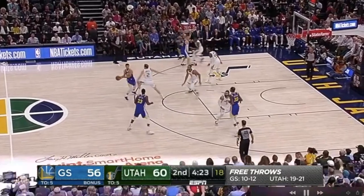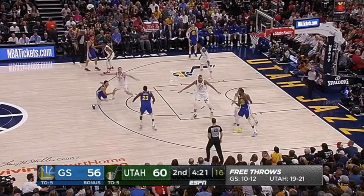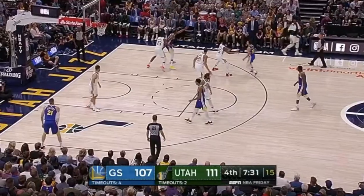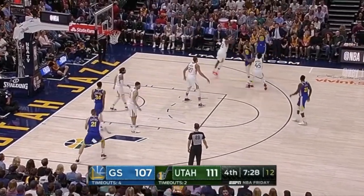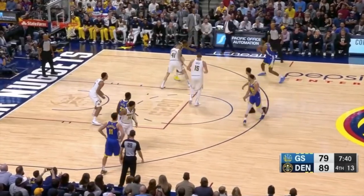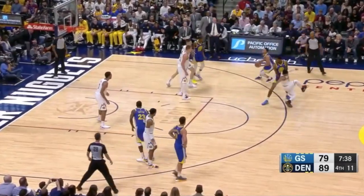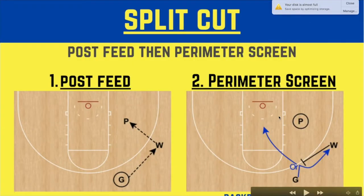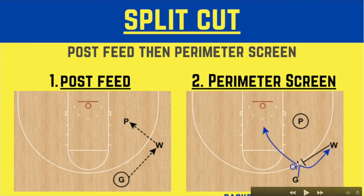In the last video we looked at three plays where it goes post feed, somebody screens for Steph Curry, and then he goes up and shoots a three. In one he faked like he was using the screen. In this video we're going to look at the counter off of that. The guard can either curl over the wing screen for a three, or they can backdoor. These first couple of clips we're going to look at a backdoor off of a split cut.